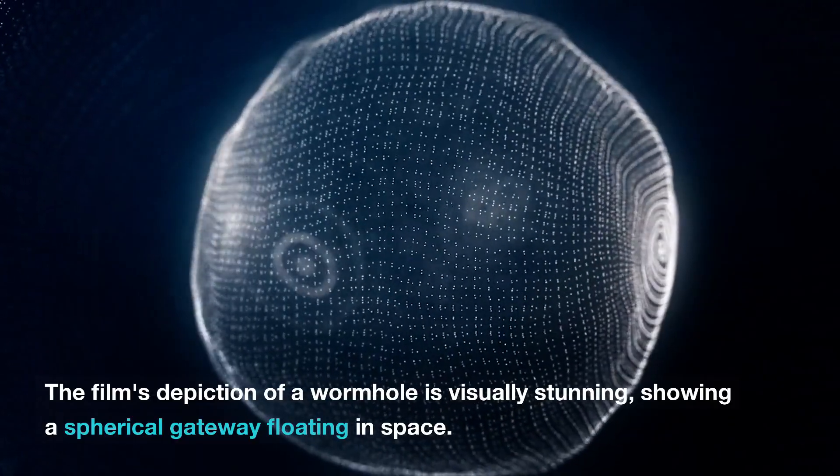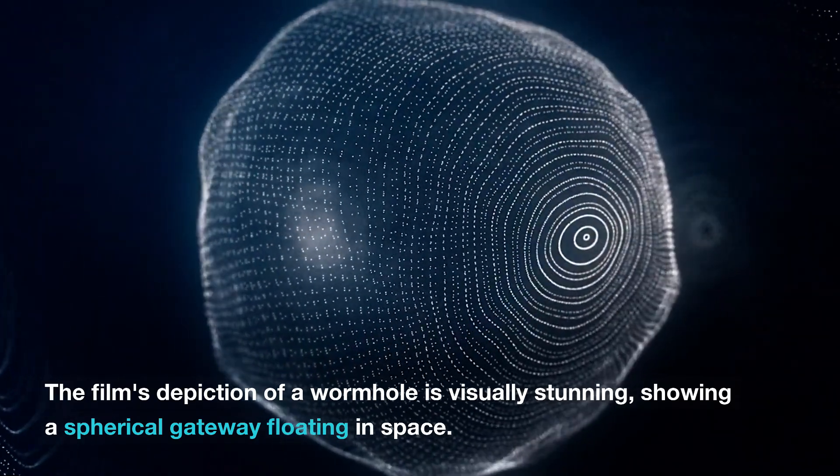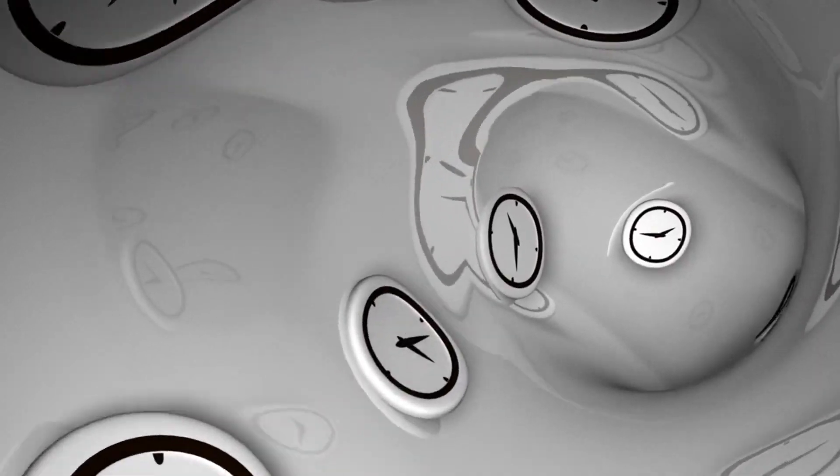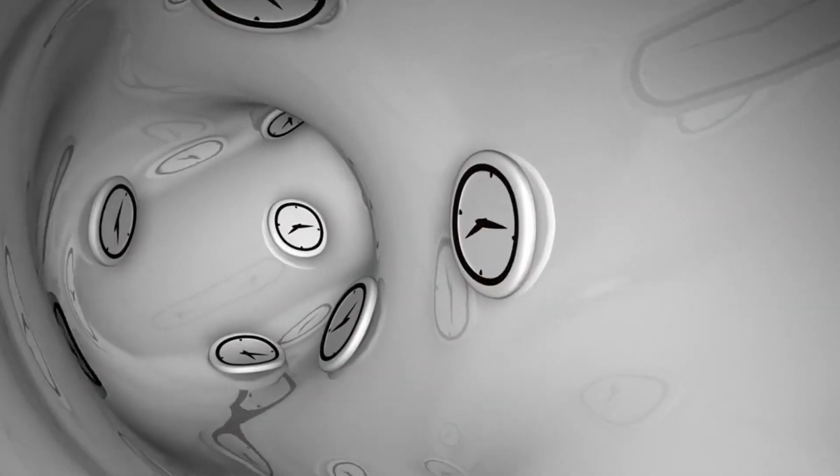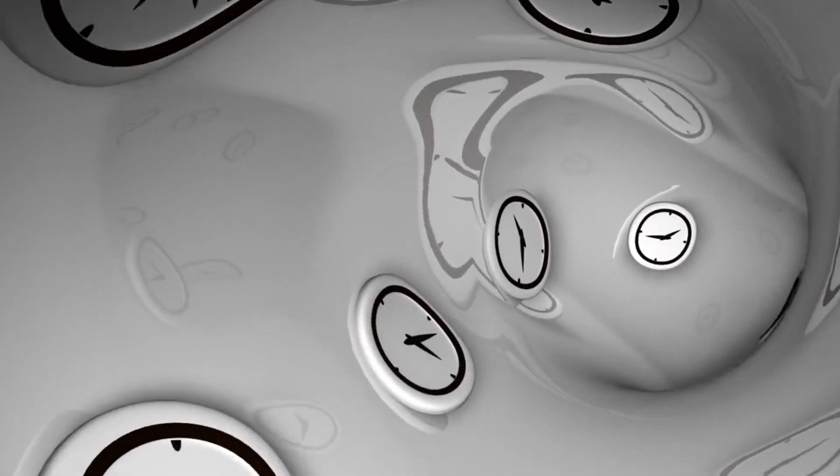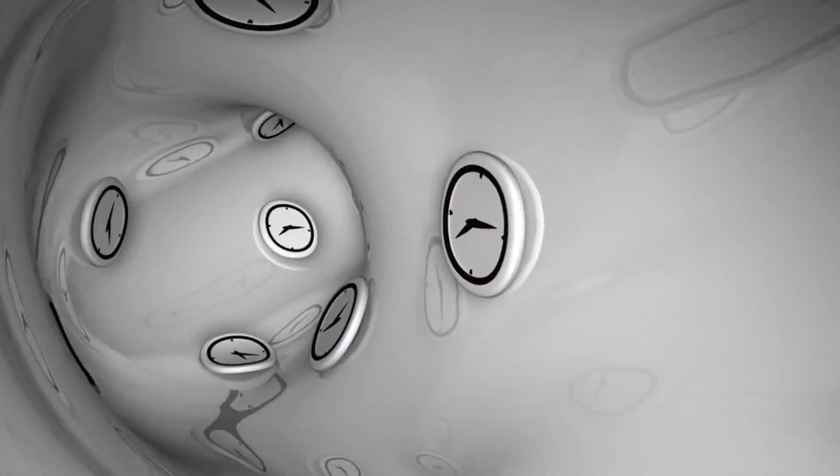The film's depiction of a wormhole is visually stunning, showing a spherical gateway floating in space. This representation was based on theoretical physicist Kip Thorne's calculations and was praised for its scientific accuracy in terms of visualizing the distortion of light along with providing a visually accurate representation of a 3D projection of a wormhole.